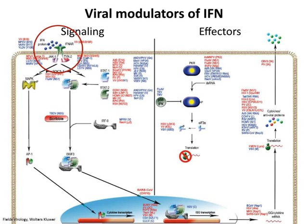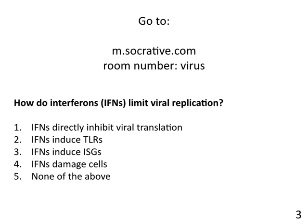Our next question: how do interferons limit viral replication? The answer is number three — interferons induce ISGs, interferon-stimulated genes. Interferons don't inhibit anything on their own — they induce things that inhibit. They don't inhibit translation directly. They cause symptoms like fever, malaise, and aches, but they don't actually damage cells. The ISGs are what have antiviral activity.